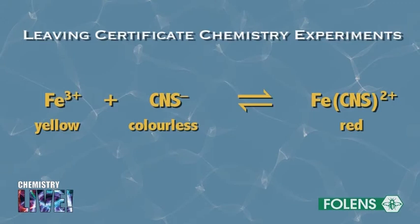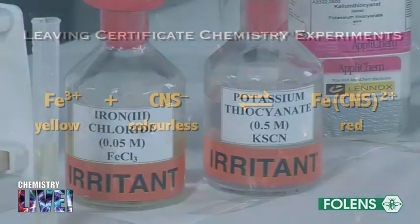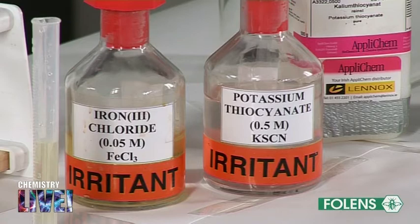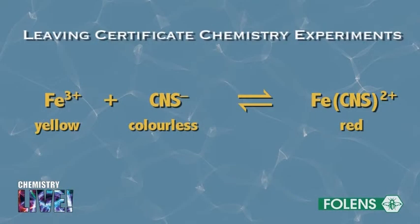In this experiment we will study the effect of A) concentration and B) temperature change on the equilibrium reaction shown on the screen. We will use iron(III) chloride FeCl3 as the source of Fe3+ ions and potassium thiocyanate KSCN as the source of the CNS- ions. Fe3+ ions are yellow and CNS- ions are colourless. However, when the two ions combine, an equilibrium reaction is set up involving the ferrothiocyanate ion, a complex ion of formula FeCNS2+ which is coloured red.